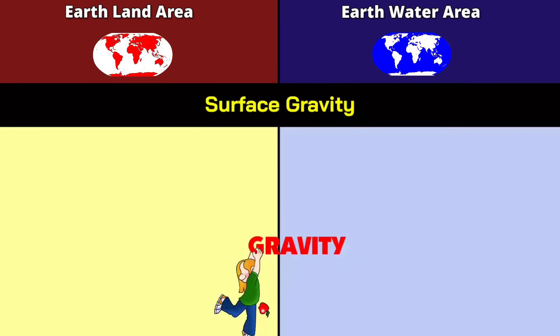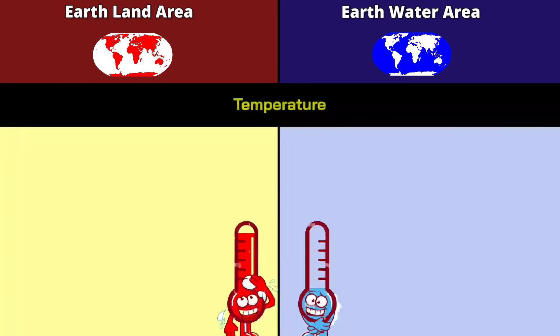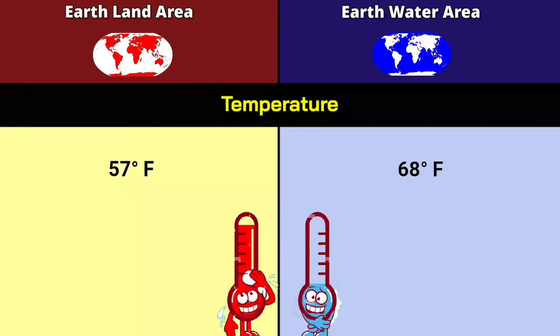Surface gravity: land at 9.81 meters per second, water at 0.2 meters per second. Temperature: land at 57 degrees Fahrenheit, water at 68 degrees Fahrenheit.